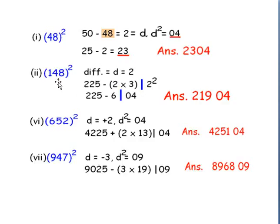Now let us go to the second example: 148. 148 is nearer to 150 and its difference from 150 is 2. So D square is 4, and we write 04. Now 225 minus thrice into the difference gives 219. So 148 square is 21904.